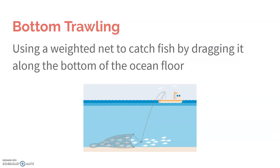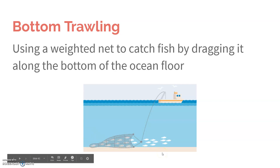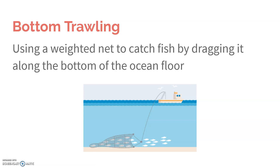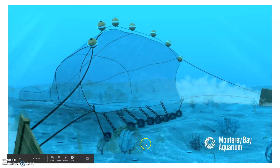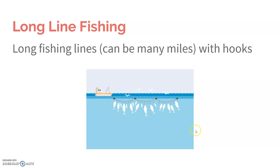Next we'll talk about different types of commercial fishing methods. The first is bottom trawling, which uses a weighted net dragged along the ocean floor. It's kind of like clear-cutting but for the ocean floor — it scrapes along the bottom and takes everything: coral, anything down there gets wiped away. This picture shows actual bottom trawling equipment with the weights and wheels that drag along, and anything caught in the net gets pulled up to the surface.